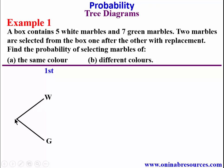For the first choice, you have a line ending at each choice, and along the line you have the probability of that outcome. The probability of picking white is going to be 5 over 12, since 5 plus 7 gives 12. So the probability of picking white as your first choice is 5 over 12. Also, the probability of picking green will be 7 over 12. That is the end of the first choice.